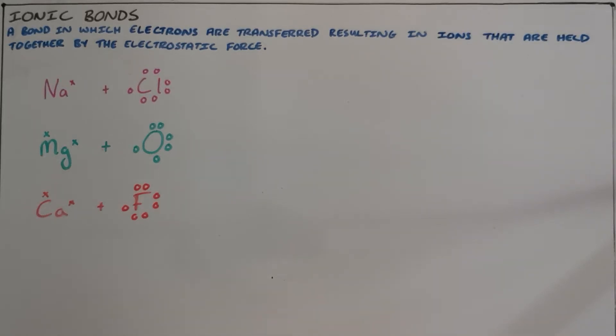An ionic bond is a bond in which electrons are transferred, resulting in ions that are held together by the electrostatic force. Unlike covalent bonds where electrons are shared between two atoms, an ionic bond is formed due to a big difference in electronegativity.